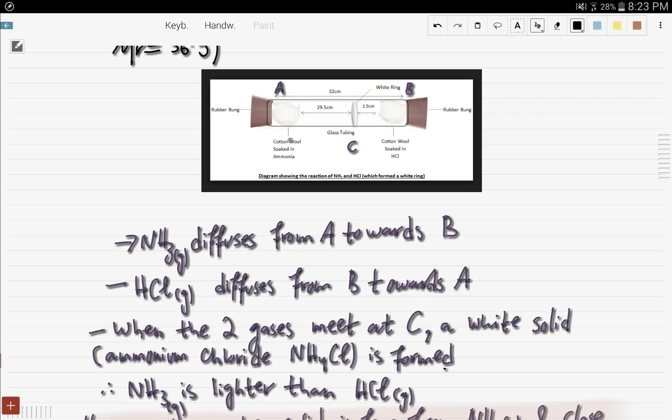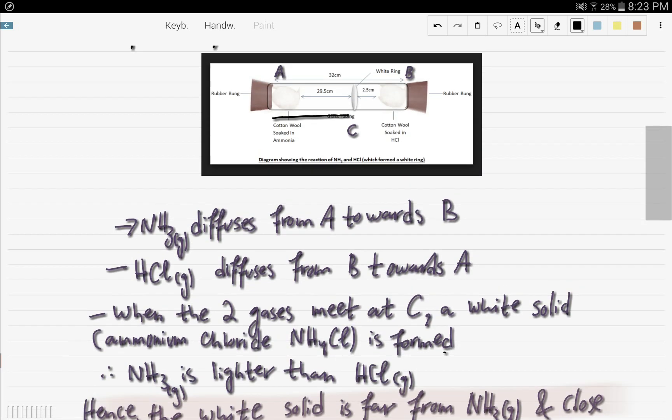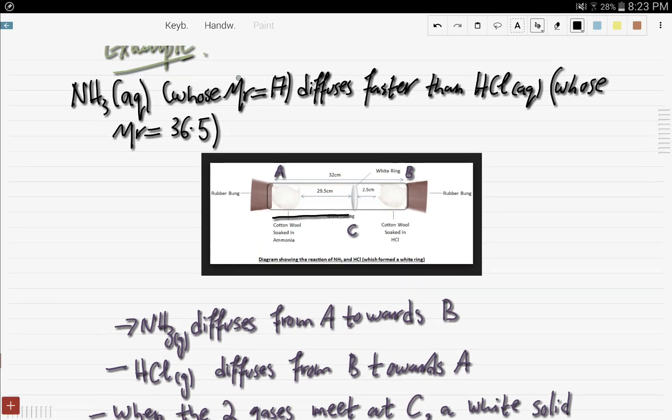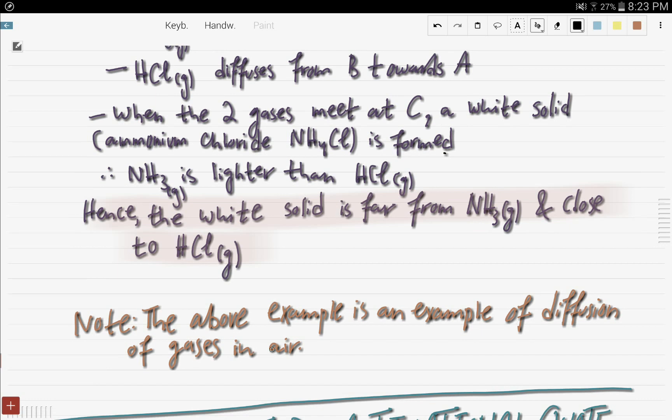So this is a proof that those with smaller molecular mass diffuse faster. And by the way, that was an example of diffusion of gases in air. Just a few minutes ago, I discussed diffusion of a soluble solid in water, and we discussed the diffusion of a soluble liquid in air. And so this was an example of diffusion of gases in air.